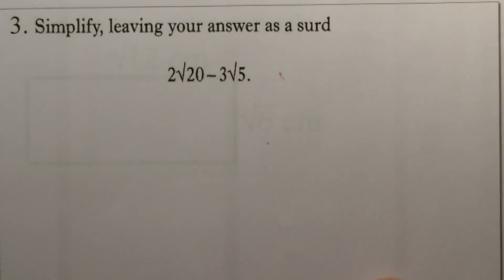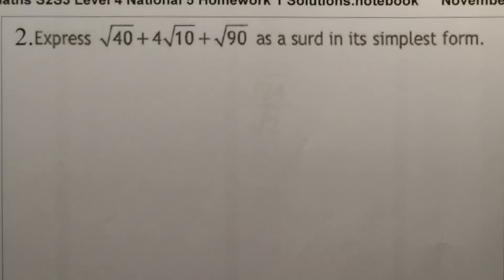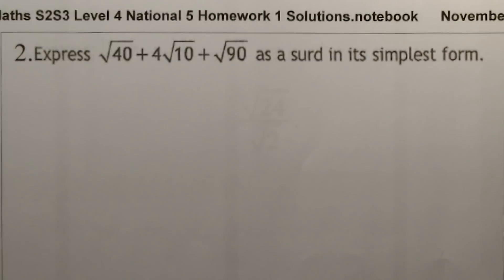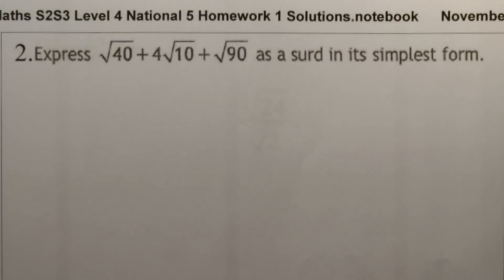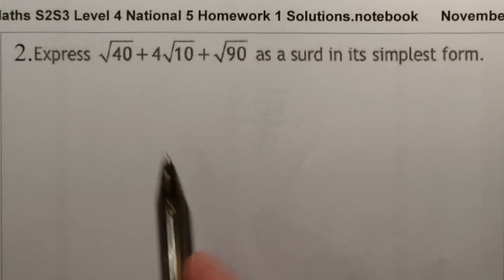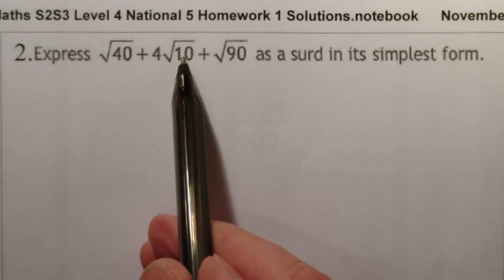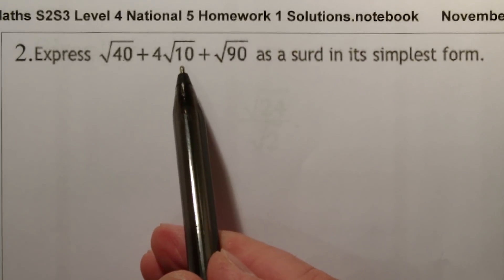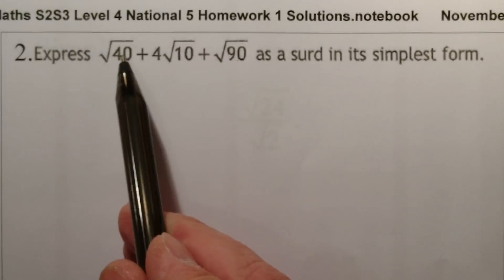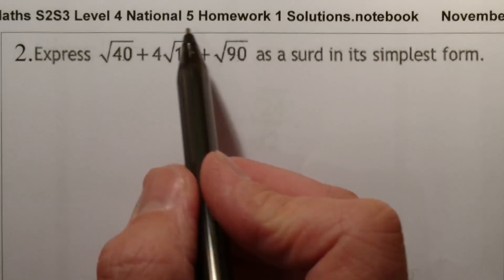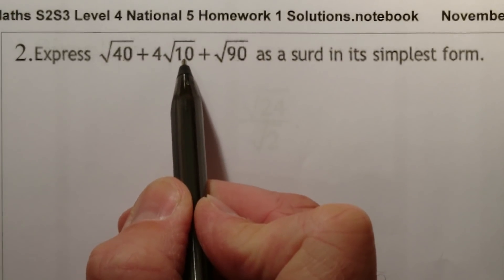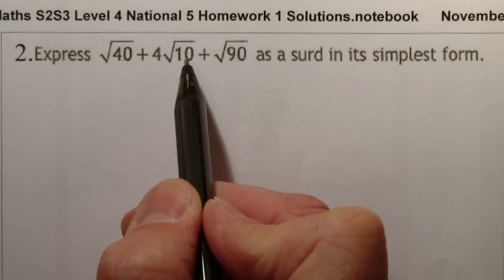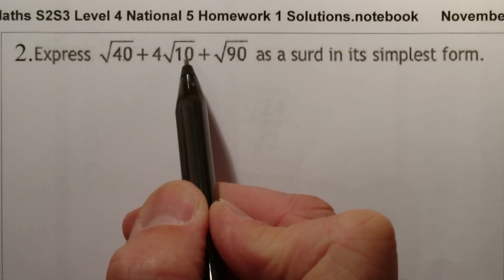On to the second question. We're going to express root 40 plus 4 root 10 plus root 90 as a surd in its simplest form. One thing to remember is that when adding or subtracting surds, the surds must have the exact same number inside the square root. I've got root 40, root 90, and root 10. Quite often in this type of question we get a clue — if one is already in its simplest form, that number will help us out. Root 10 can't be simplified further, so that's our clue.